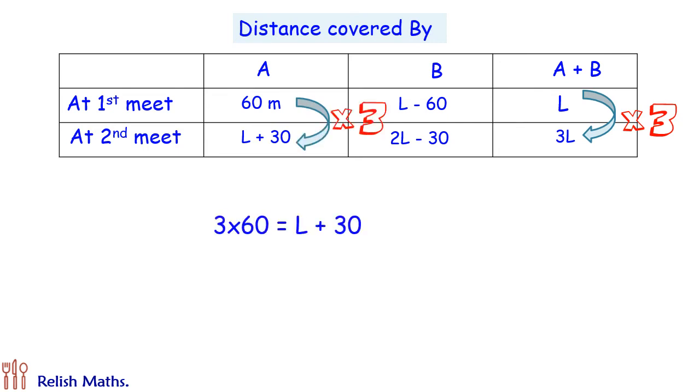Or it should be 60 into 3 that is L plus 30. On computing it we will get L plus 30 is 180, or L is 150 meters and that is our answer.